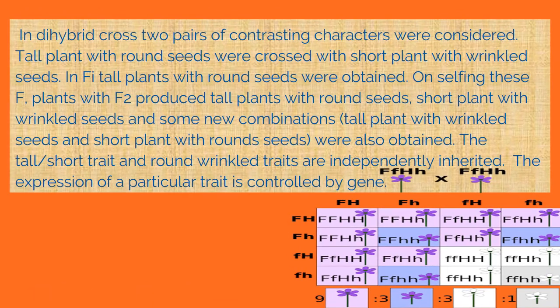In Dihybrid Cross, two pairs of contrasting characters were considered. Tall plants with round seeds were crossed with short plants with wrinkled seeds. In F1, tall plants with round seeds were obtained. On selfing these F1 plants, F2 produced tall plants with round seeds, short plants with wrinkled seeds, tall plants with wrinkled seeds, and short plants with round seeds. The tall or short trait and round or wrinkled traits are independently inherited.